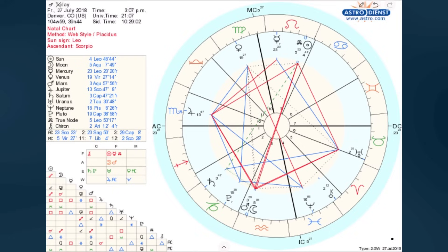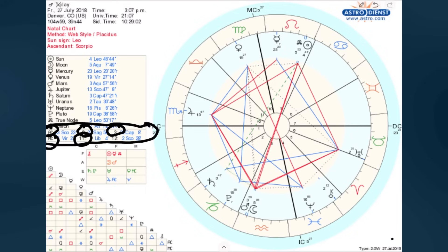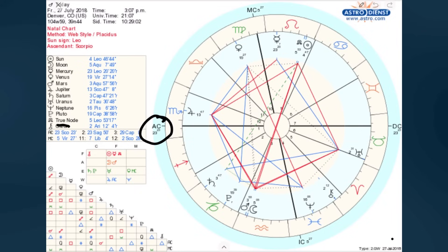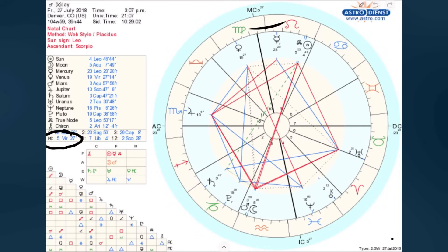The very last box worth mentioning is this little box that lists the degrees for the Ascendant, the Midheaven, the starting point or cusp of the second house, the third house, the eleventh house, and the twelfth house. This is basically a box that lists the starting point for some of the houses, just in case you weren't able to read that information in the chart itself. For example, we know from the diagram that the Ascendant is at 23 degrees of Scorpio, and this box also tells us that the Ascendant is at 23 degrees of Scorpio. Similarly, the Midheaven — the starting point of the 10th house — is at 5 degrees of Virgo, and the box tells us that as well. It basically reiterates the same information that's already in the chart itself.